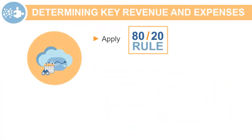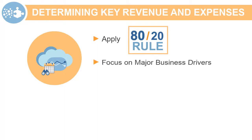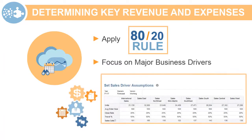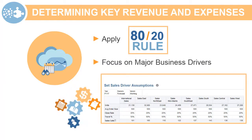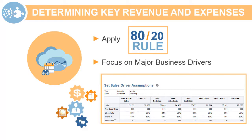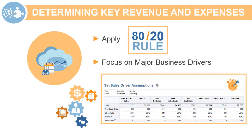Apply the 80-20 rule. Determine the key revenue and expense areas that make up 80% of profit and loss. Focus your application on the major drivers of your business by spending time designing for those areas that are most impactful. Keep the process simpler for the less impactful areas.